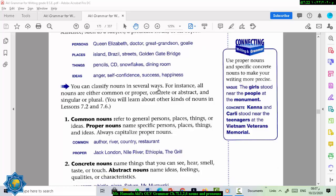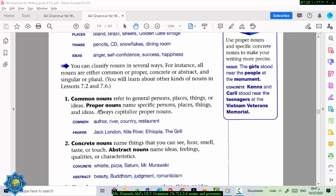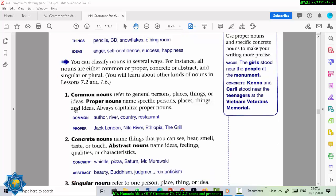You can classify nouns in several ways. For instance, all nouns are either common or proper, concrete, abstract, singular, or plural, and so on. Okay, what's the difference between common and proper nouns?